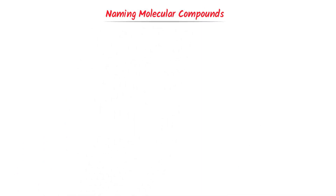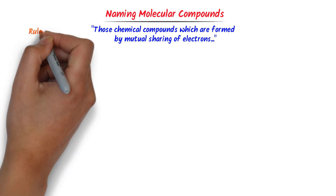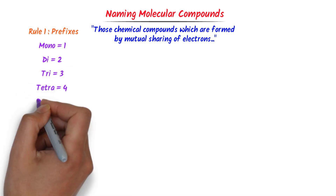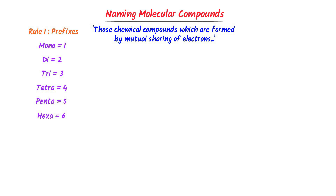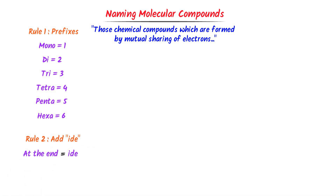Now we will learn naming molecular compounds, also called covalent compounds. Molecular compounds are those chemical compounds formed by mutual sharing of electrons. To name them, remember two rules: firstly, learn prefixes — mono, di, tri, tetra, penta, hexa, etc. Secondly, always add -IDE to the end of the second element's name. Using these two rules, we can name any molecular compound.